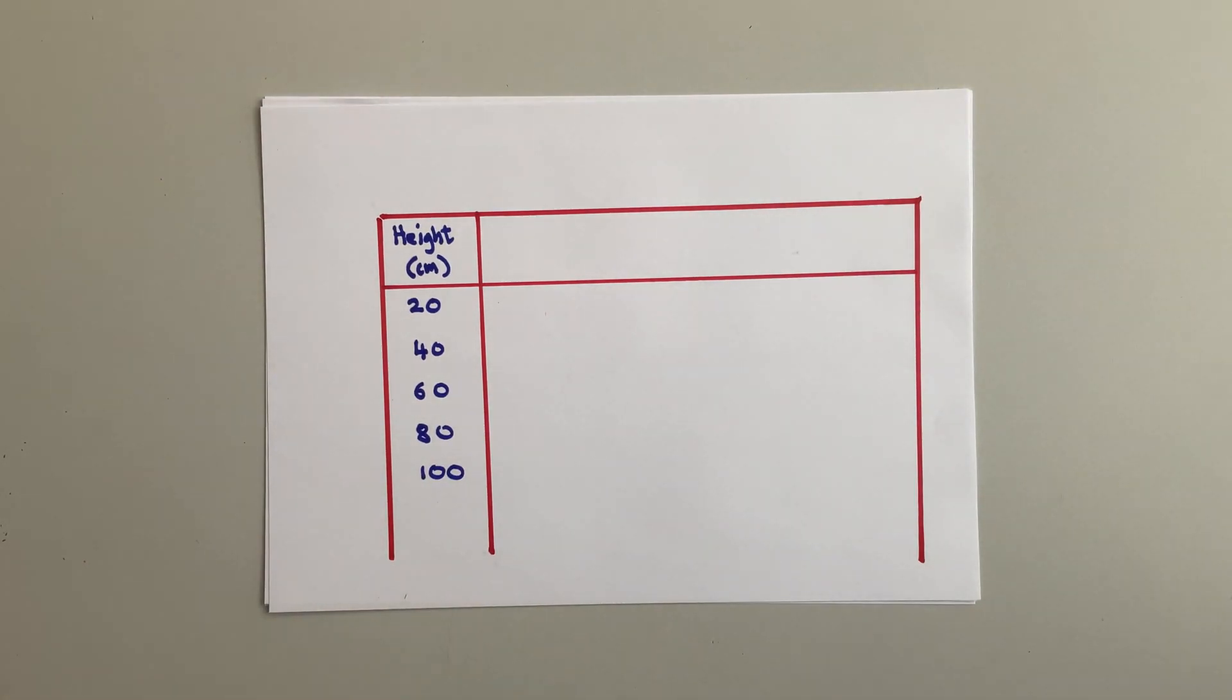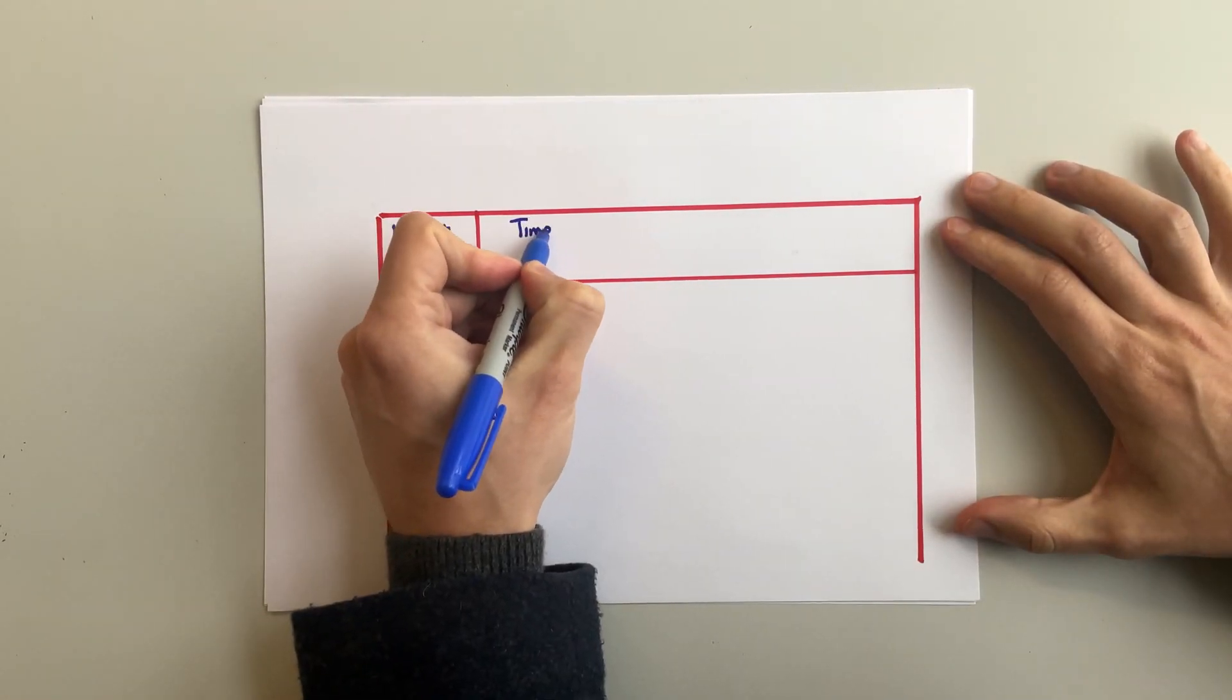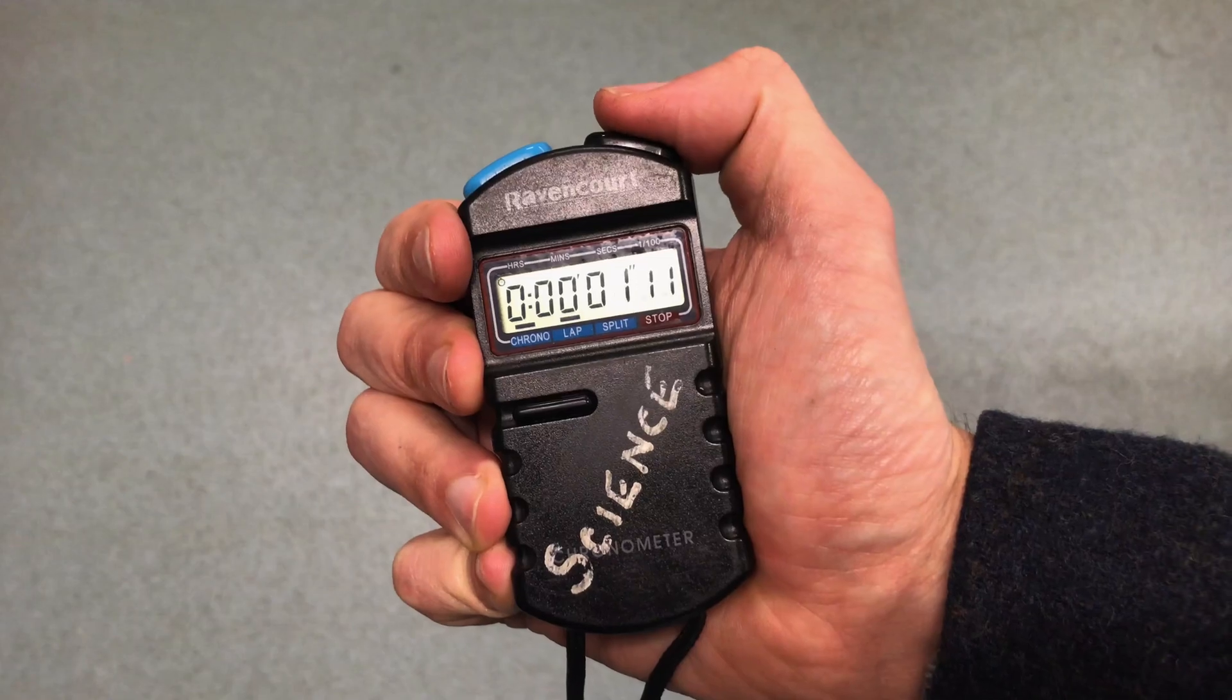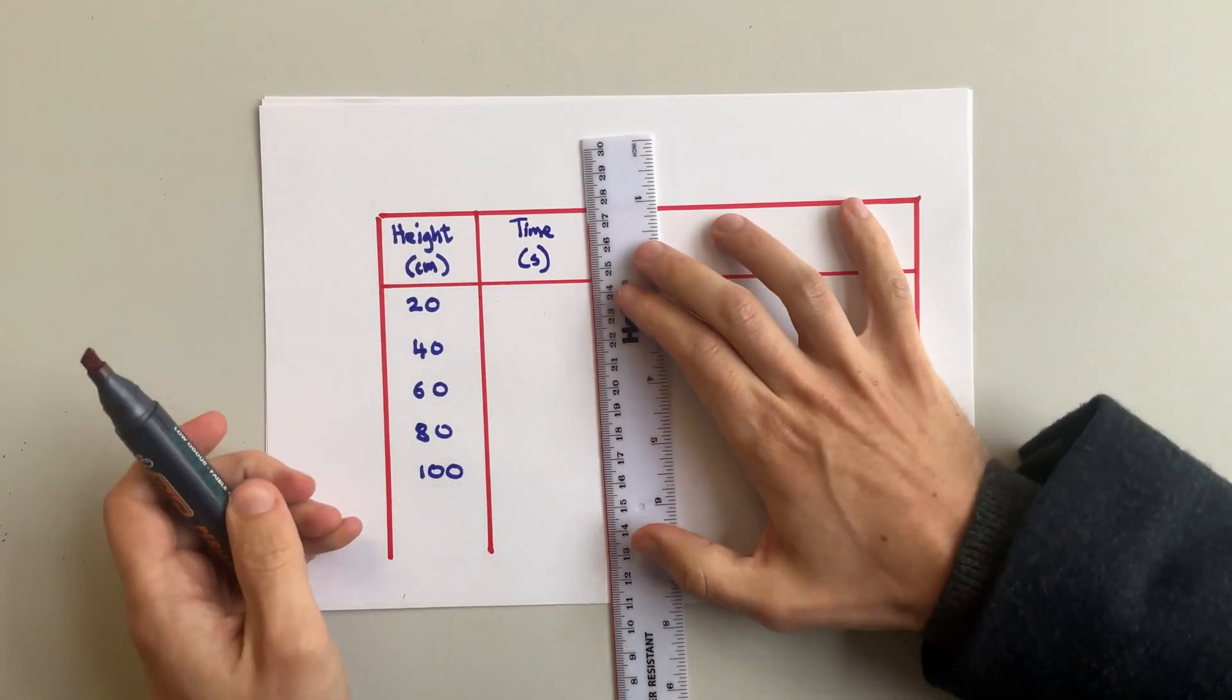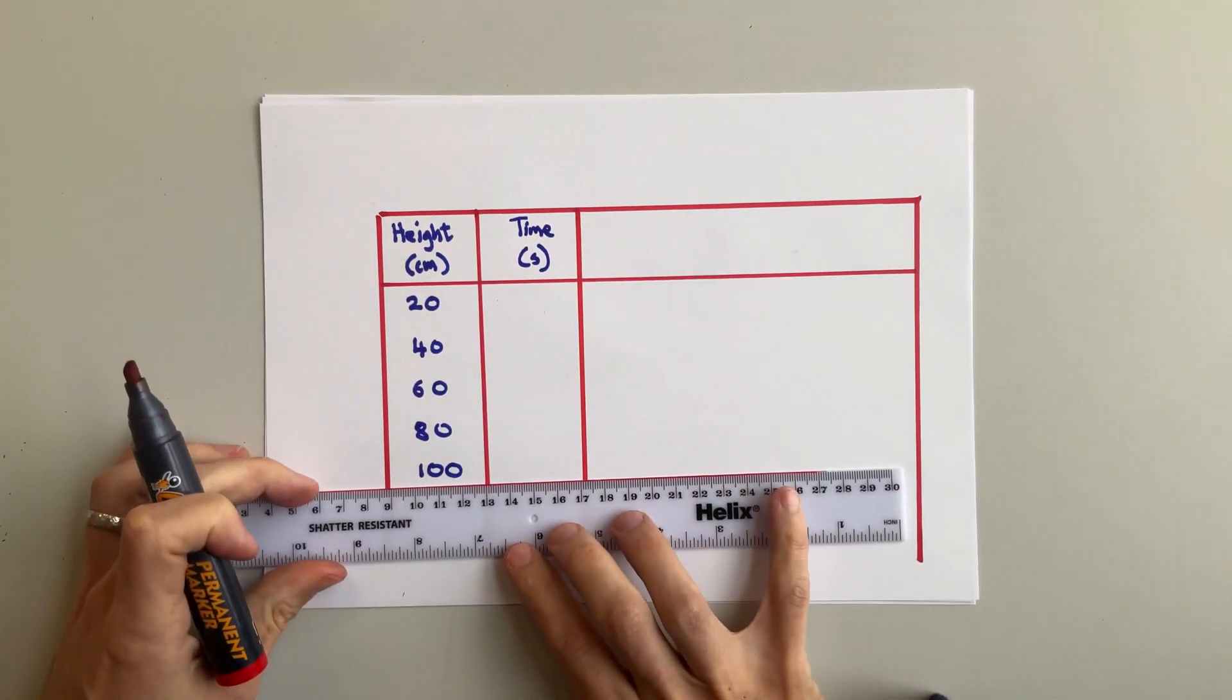The next column across is for our dependent variable, the thing we measured in our experiment. So for the toy car example, that's the time it took to get from the top to the bottom of the ramp. When you've finished recording your results, draw a neat line underneath.